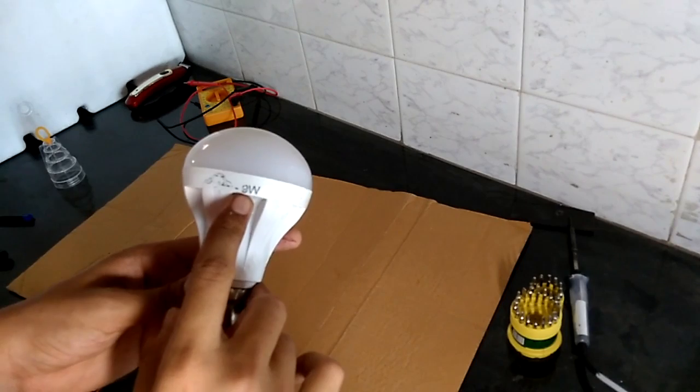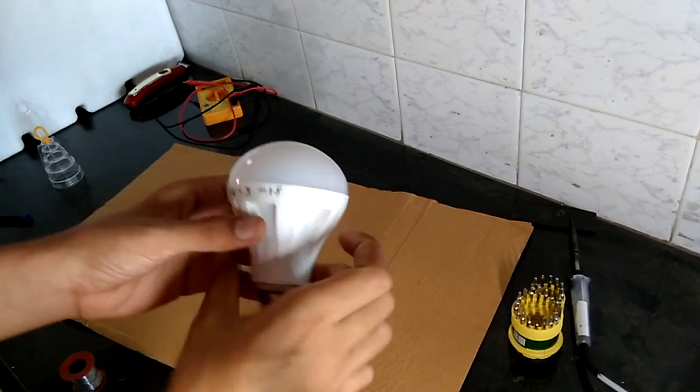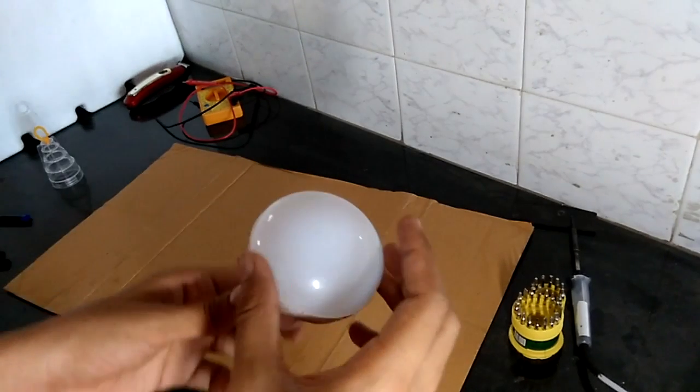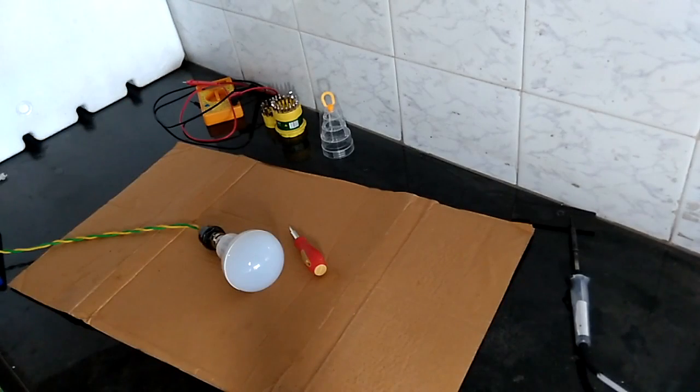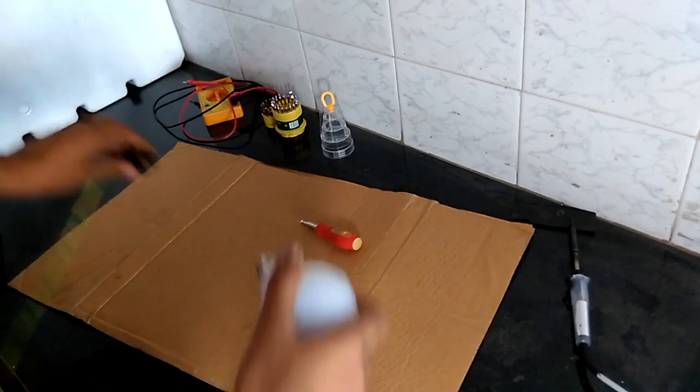I have got this 9 watt LED lamp. Usually we use 5 watt and 9 watt LED lamps in our home. I am just going to check it whether it is working or not. I am providing it 230 volts but it is not working. So let's figure it out how to fix it.